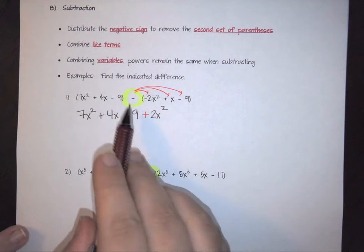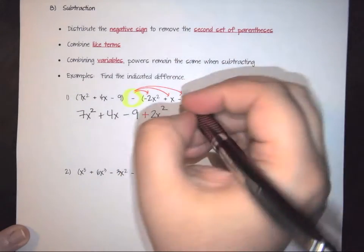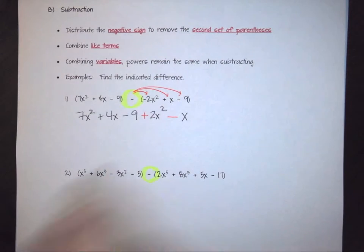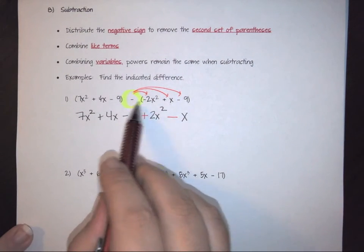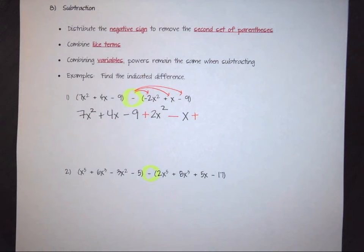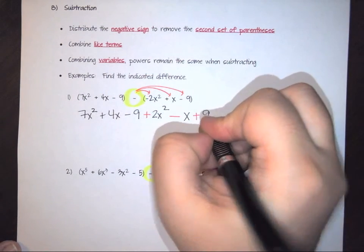I then have negative times positive. So this becomes a negative. And my x comes through. And then again, I have negative times negative, which makes this a positive. And then my 9 comes last.